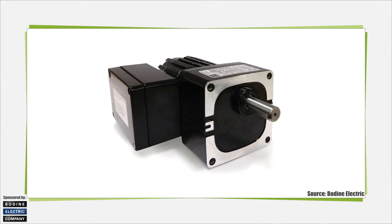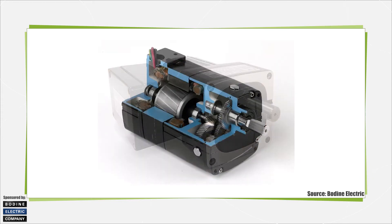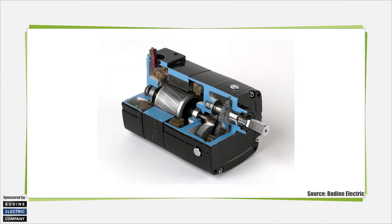Most industrial gear motors incorporate fixed or variable speed AC motors. However, some gear motors use PMDC or BLDC motors, which are common in applications where quiet operation, high torque density, or variable speed are required.